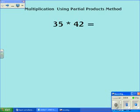In this video, I'm going to show you that there are two different ways that you can solve this problem using the partial products method. The number is 35 times 42.